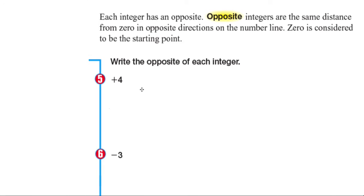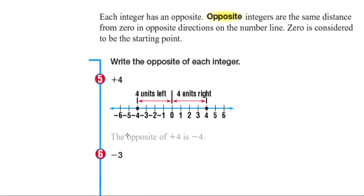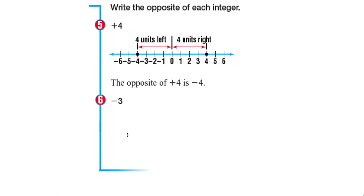So positive 4. If we look at our number line, 0 is the starting point. And since we have positive 4, that means it's 4 units to the right of our number line. So the opposite of positive 4 will be 4 units to the left of our number line, which is negative 4. So the opposite of positive 4 is negative 4.